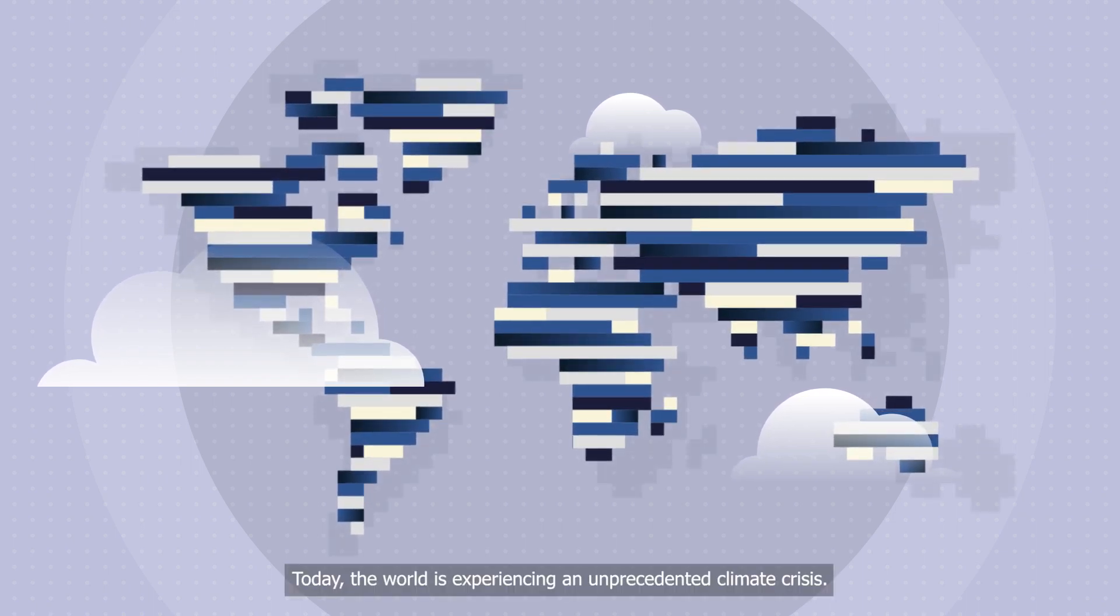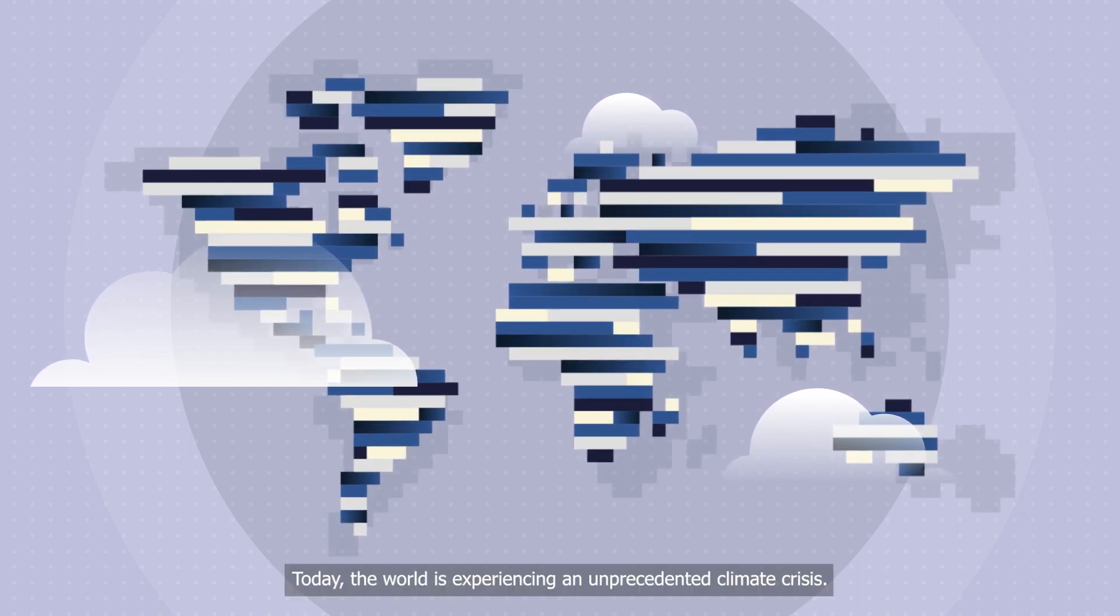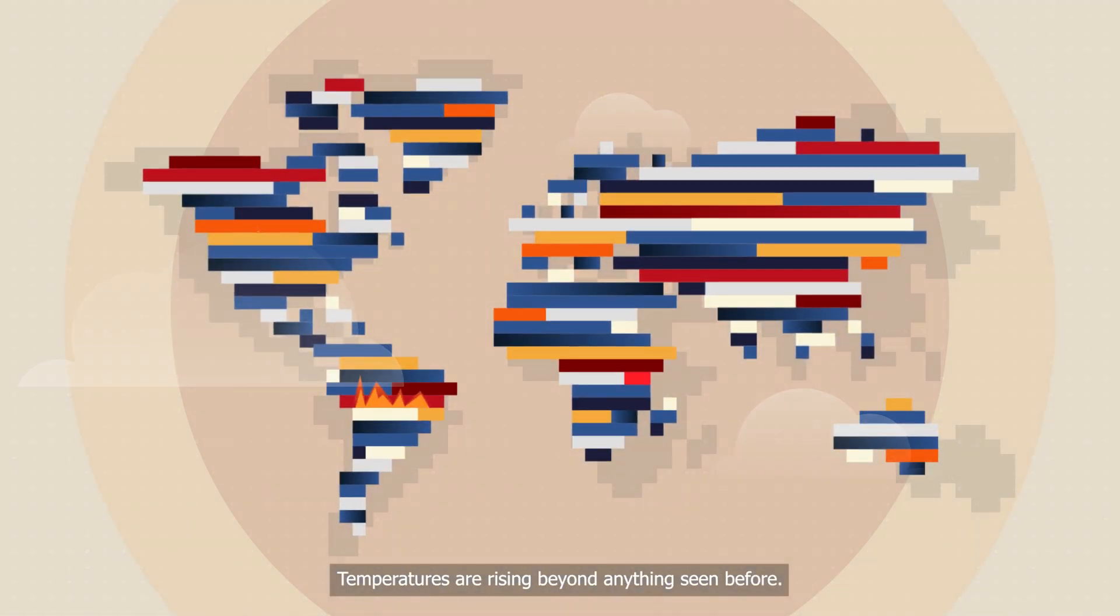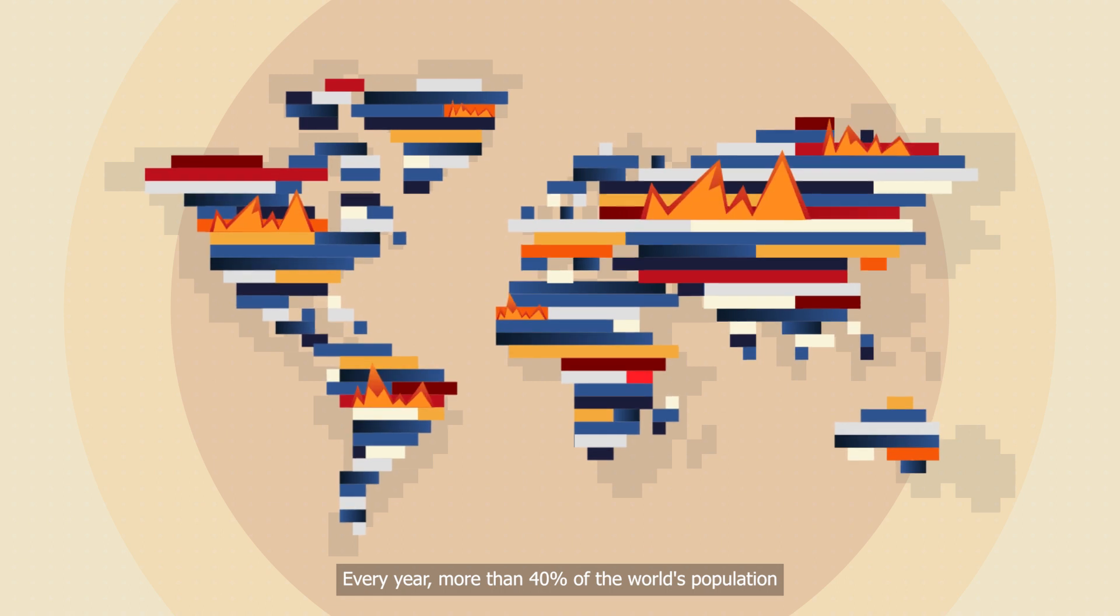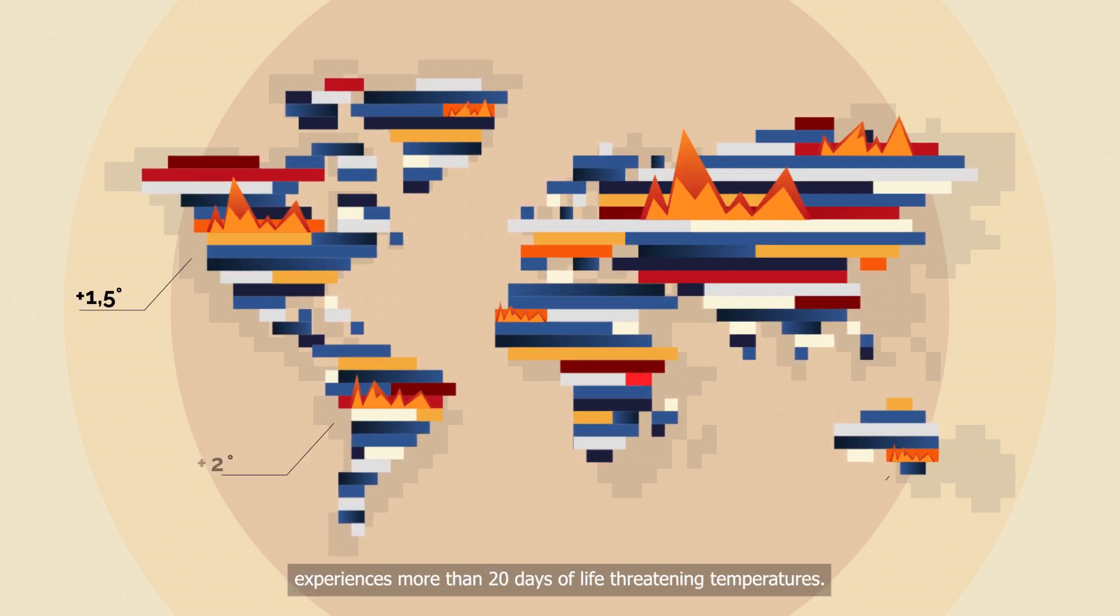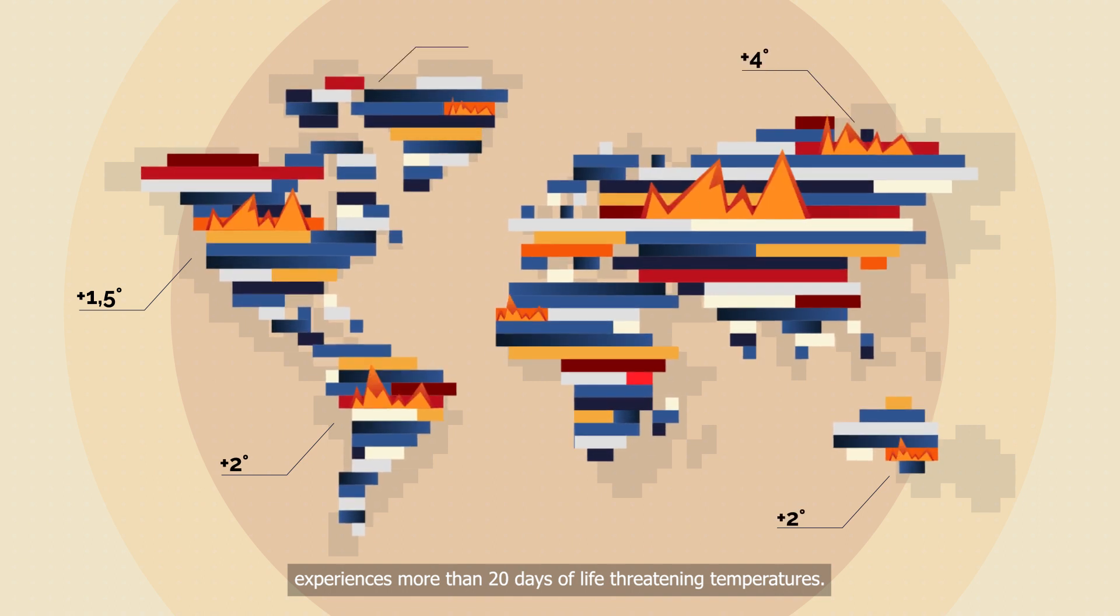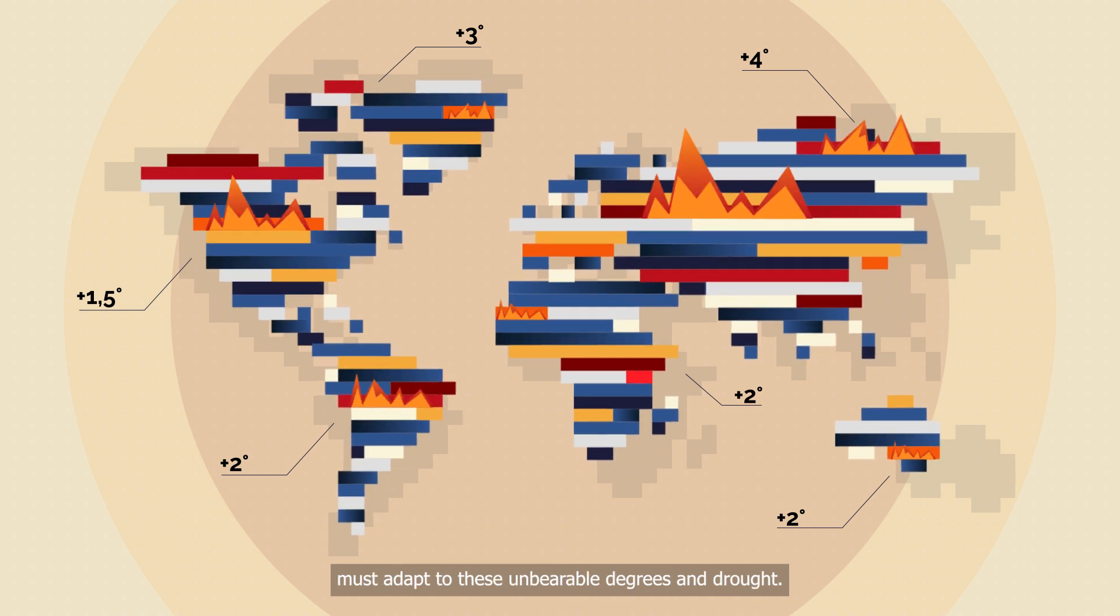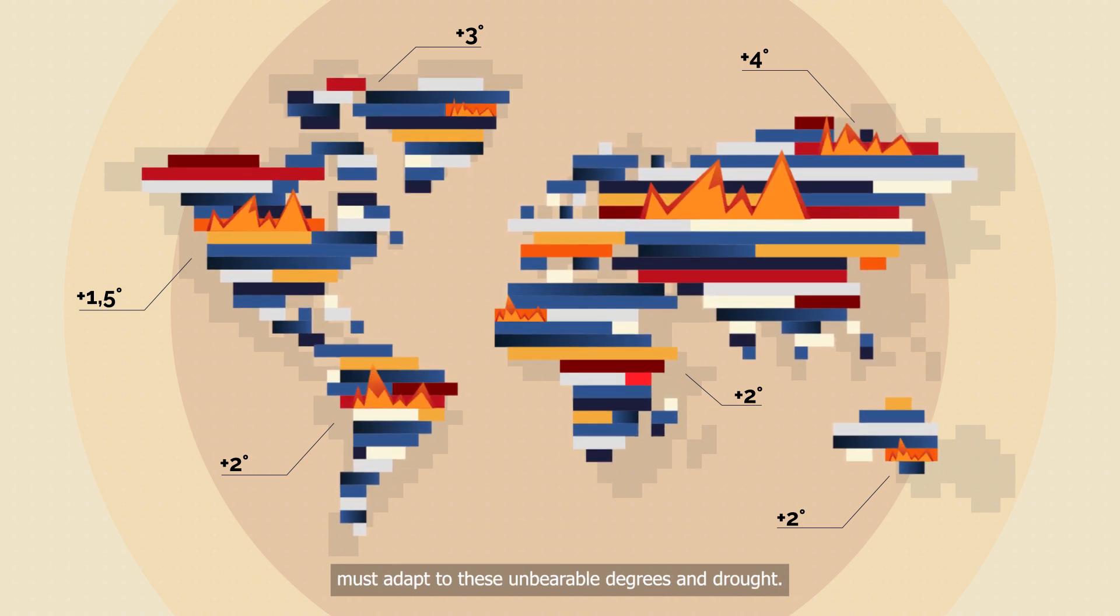Today, the world is experiencing an unprecedented climate crisis. Temperatures are rising beyond anything seen before. Every year, more than 40% of the world's population experiences more than 20 days of life-threatening temperatures. The Earth goes up in flames every summer, and mankind must adapt to these unbearable degrees and droughts.